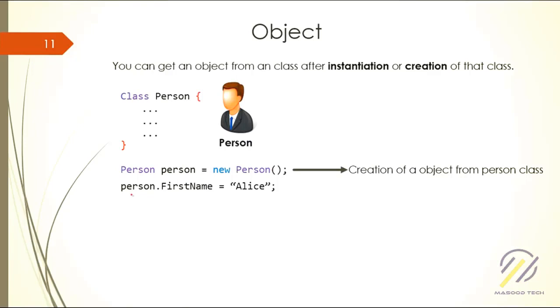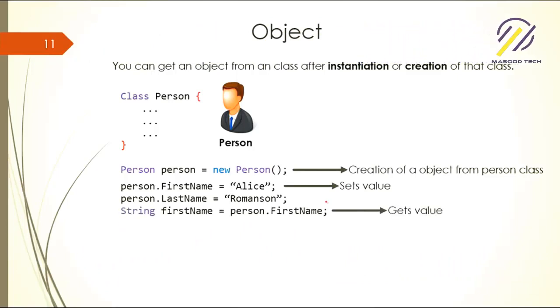After creation of the object, write the object and put a dot, and you will see the properties of that object. In this case we have first name, last name. So I just dot the person and then I got the first name, and then I am putting value Alice. And this is how you set values, and last name Romanson. This is how I set values.